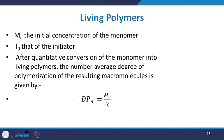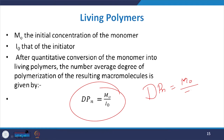Let us do some mathematical calculation related to the average degree of polymerization of macromolecules resulting from living polymers. M0 is the initial concentration of the monomer and I0 is the concentration of the initiator. After quantitative conversion of the monomer into the living polymer, the number average degree of polymerization of the resulting macromolecule is given by: DPN = M0 / I0.